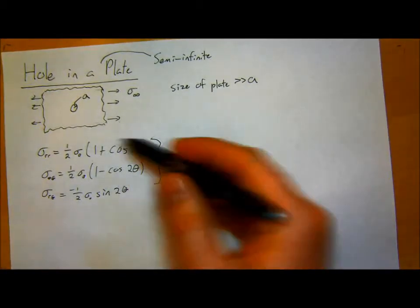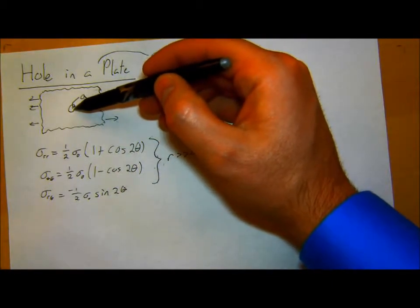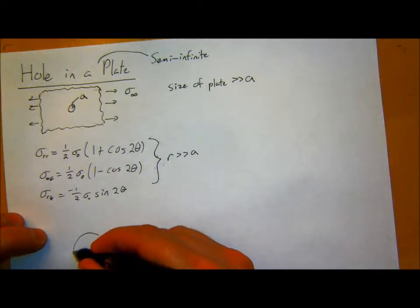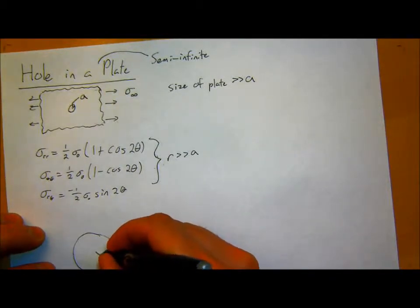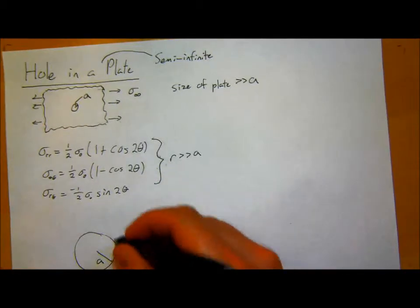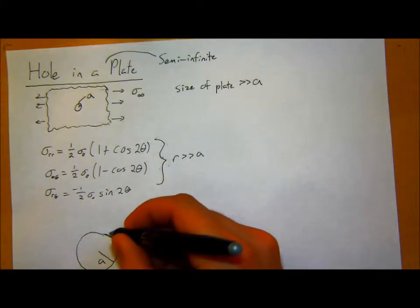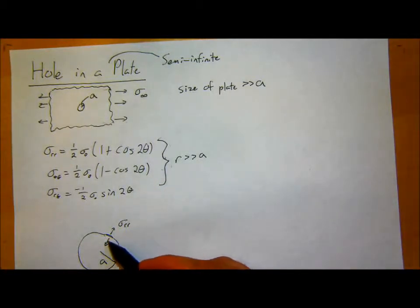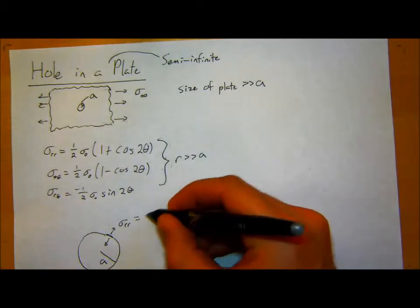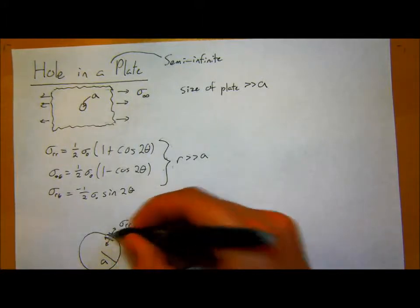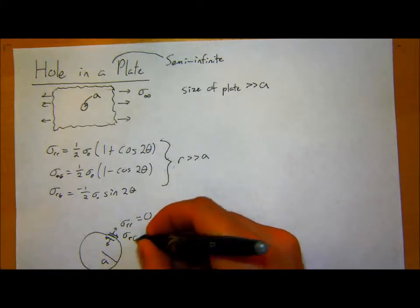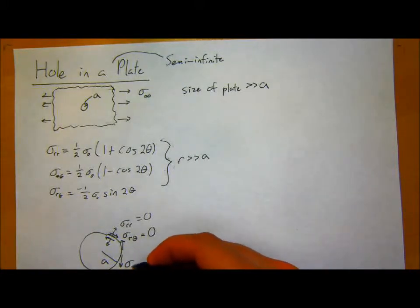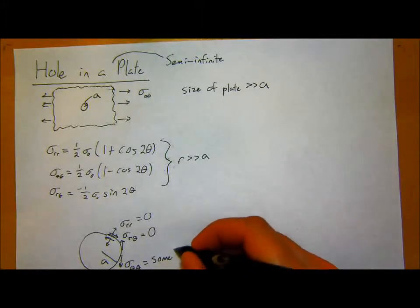I want to figure out what the stress at the hole itself is. At the edge of the hole — at the surface — because of the free boundary, I can't have a stress in the r-direction, since there's nothing there to pull on. Similarly, I can't have a shear along the surface, so sigma-r-theta is also zero. But I can be pulling along the side of the plate, so sigma-theta-theta is something. The question then is: what is that something?